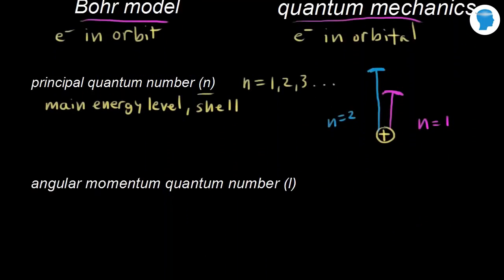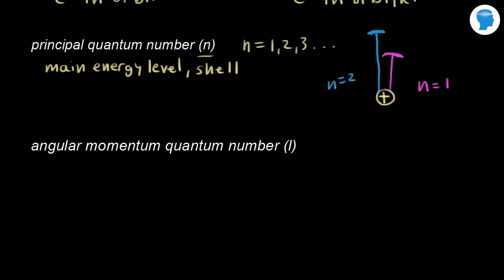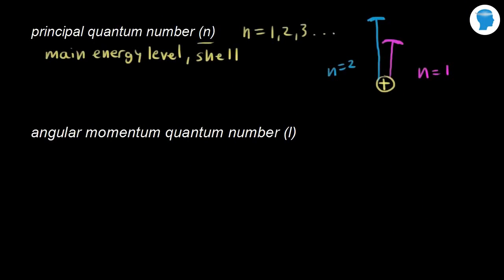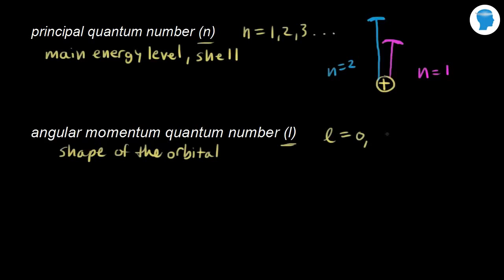The second quantum number is called the angular momentum quantum number, symbolized by l. l indicates the shape of the orbital. Values for l are dependent on n — they go from zero all the way up to n minus one.